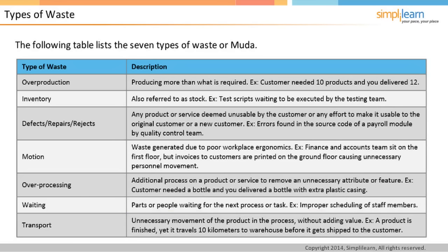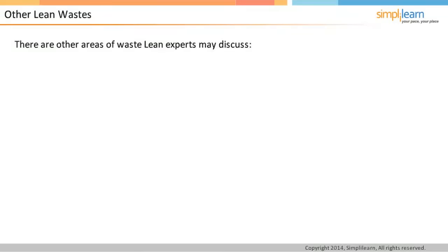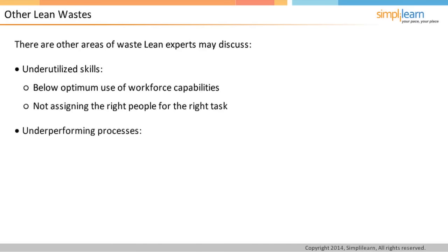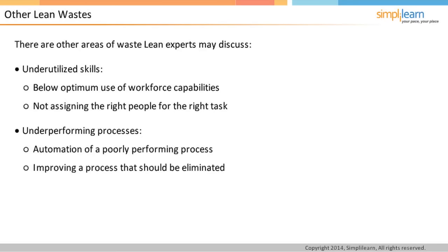Some Lean experts talk about additional areas of waste. Underutilized skills occur when the workforce has capabilities not being fully used, such as people assigned to jobs in which they do not fit. Underperforming processes include automation of poorly performing processes or improving a process that should be eliminated, such as the product returns department. Asymmetry in processes that should be eliminated is another example — for instance, two signatures to approve a cost reduction but six signatures to reverse it.